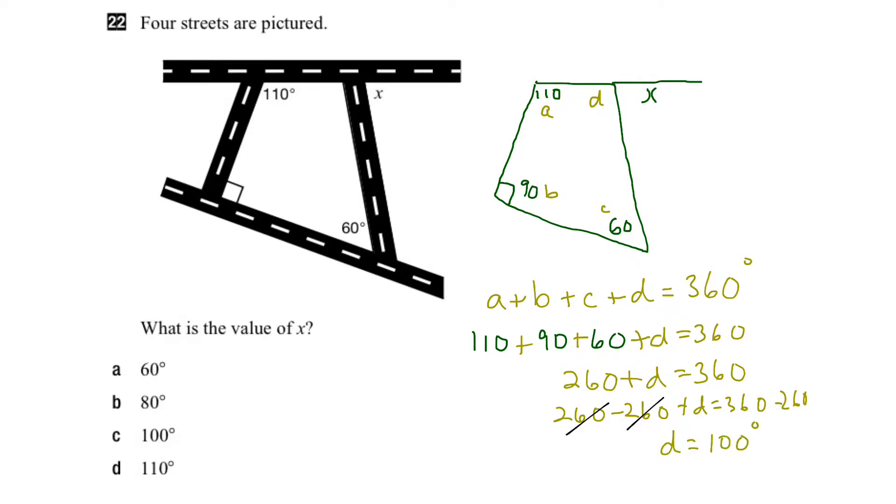So I can put that in here now, D is 100 degrees. Next, we can look at this straight angle here, which is 180 degrees. That means that D plus x would add up to 180 degrees.